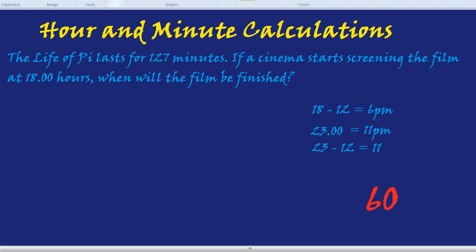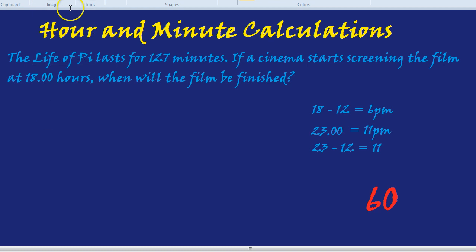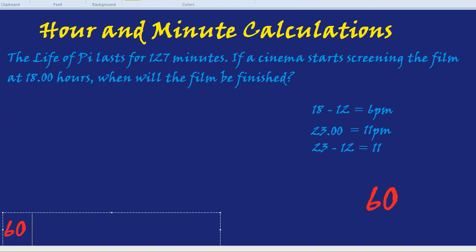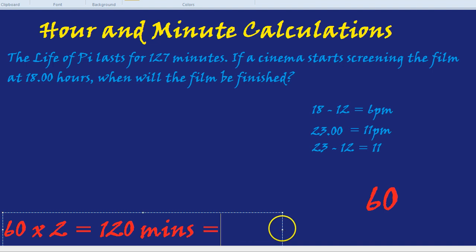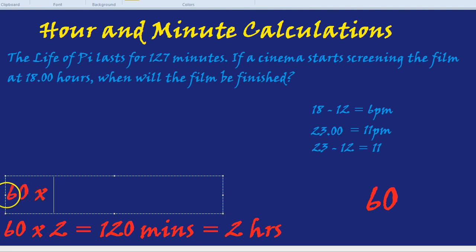How many minutes are in two hours? We do 60 times 2, which equals 120 minutes — that's 2 hours. What about 3 hours? Same trick: 60 times 3 equals 180 minutes, which is 3 hours.